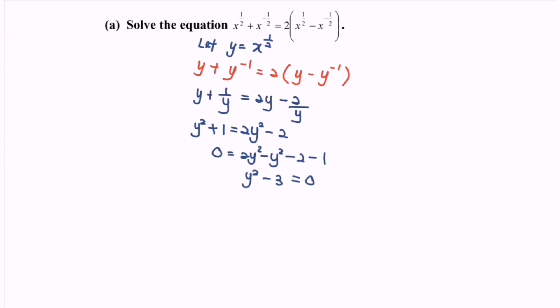Factor the situation: y minus square root of 3, multiplied with y plus square root of 3 equals to 0. So the value of y will be equal to square root of 3 and negative square root of 3.